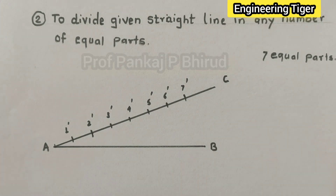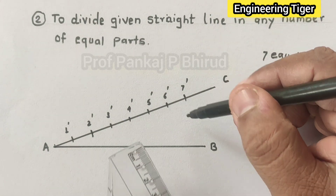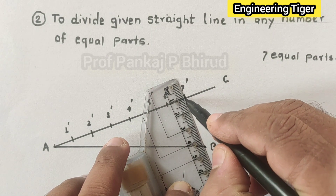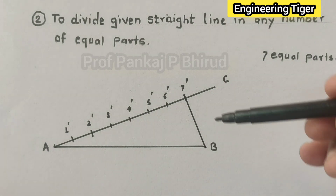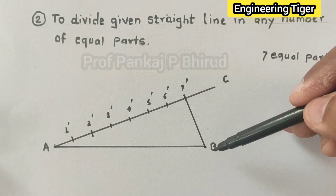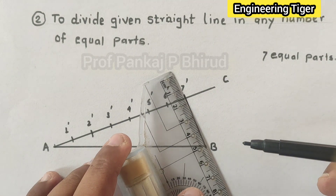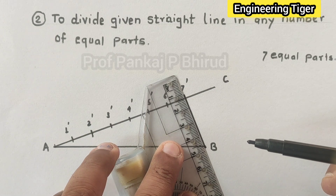Now, join point B to the last arc — that is point 7 dash — this is the limit. We have to do this lightly with a light pencil. Similarly, draw parallel lines through each of the remaining points. These parallel lines will divide the AB line.